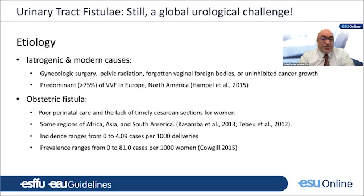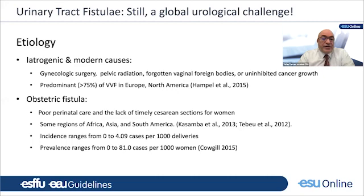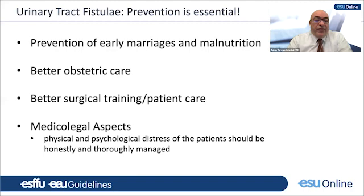This leads to a very significant social problem for the female population, resulting in suicides or isolation of women from society and divorces. So vesicovaginal fistula is not only a medical problem but also a social problem in some parts of the world. Obstetric fistula incidence ranges from 1 to 4 cases per 1,000 deliveries, and prevalence ranges from 0 to 81 cases per 1,000 women — it continues to be a major global problem.